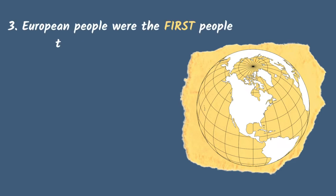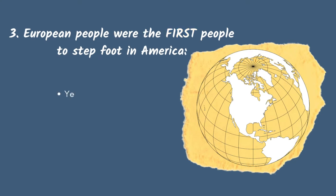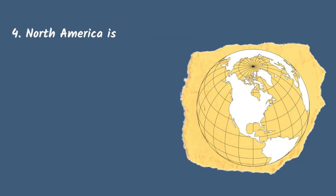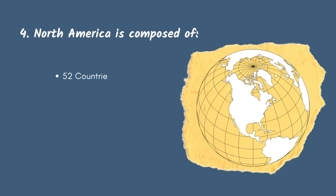Question 3: Were European people the first people to step foot in North America — yes or no? In fact, North America was inhabited by the indigenous people thousands of years before the European people stepped foot there. Question 4: North America is composed of 52 countries, 48 countries or 23 countries? The right answer is 23 countries.